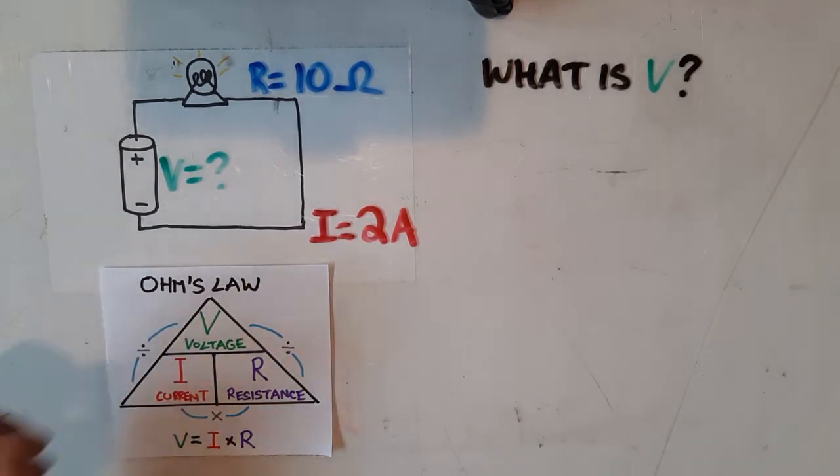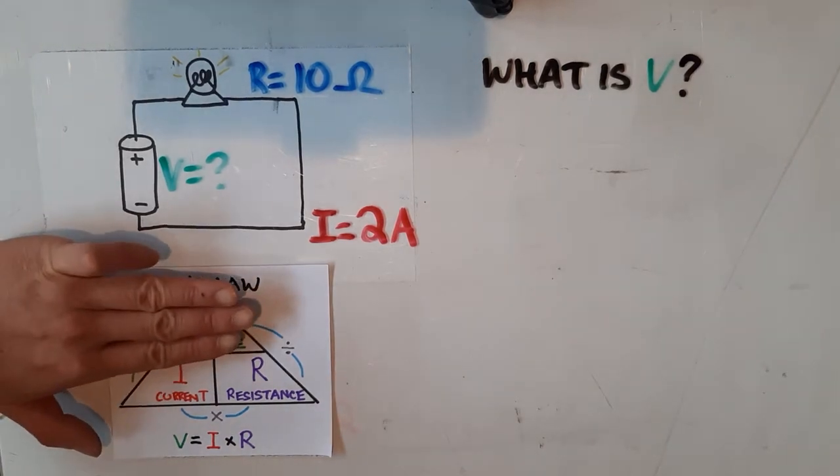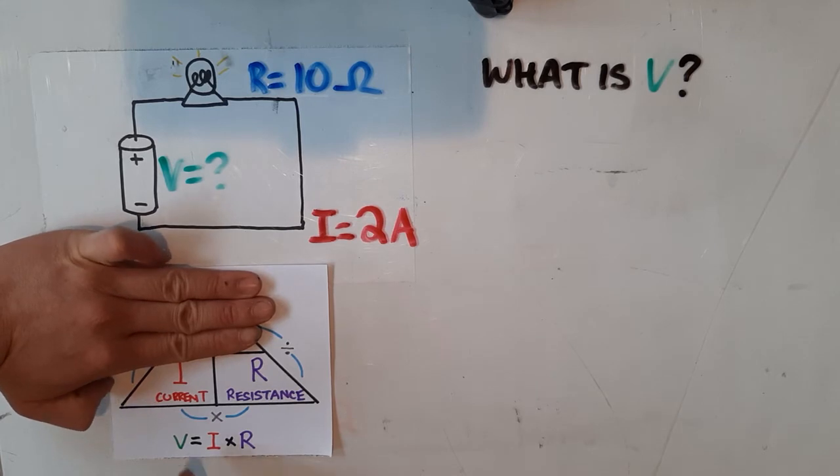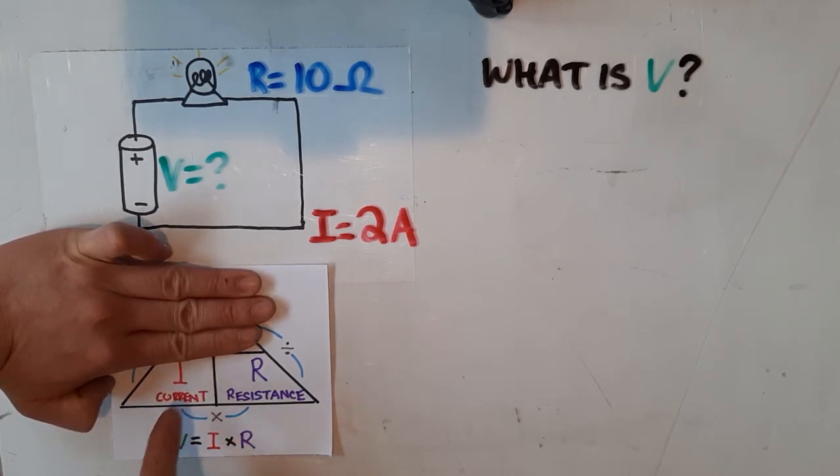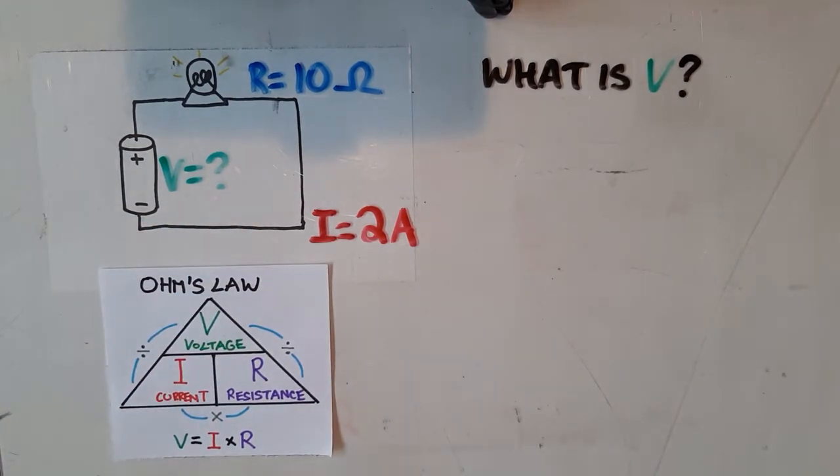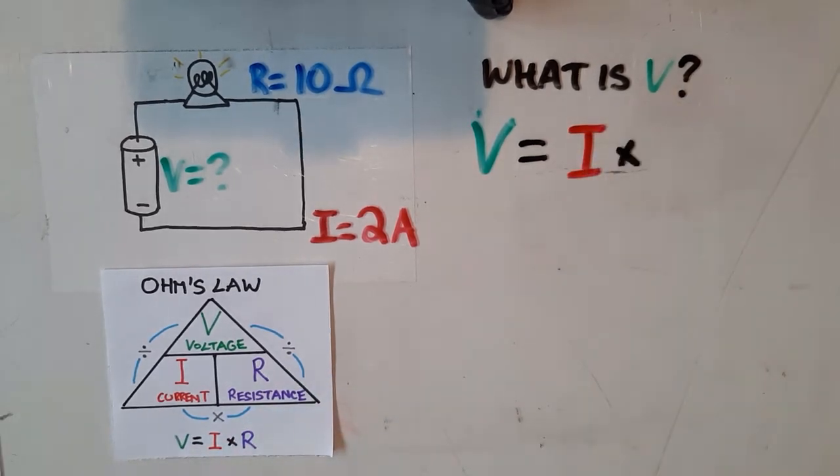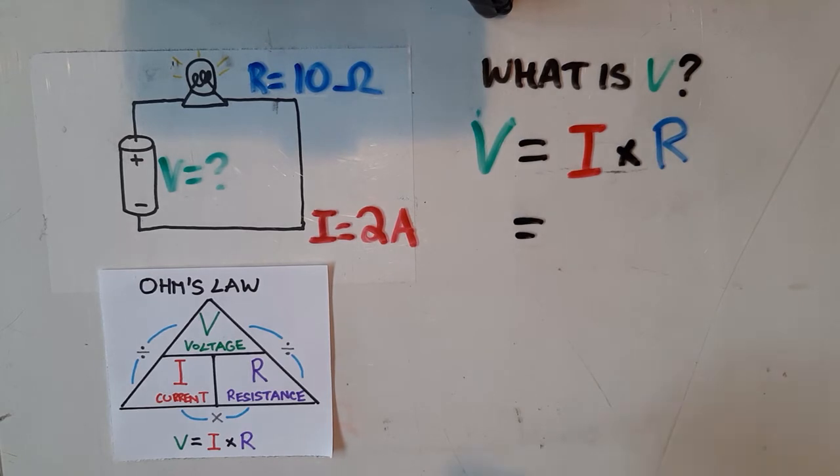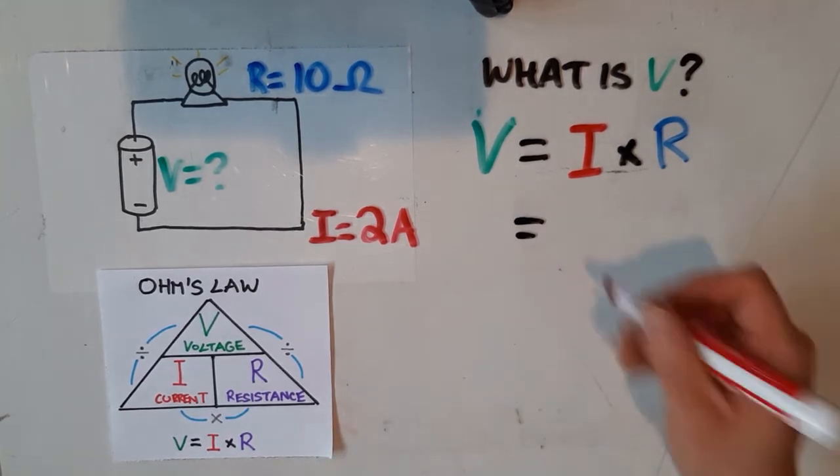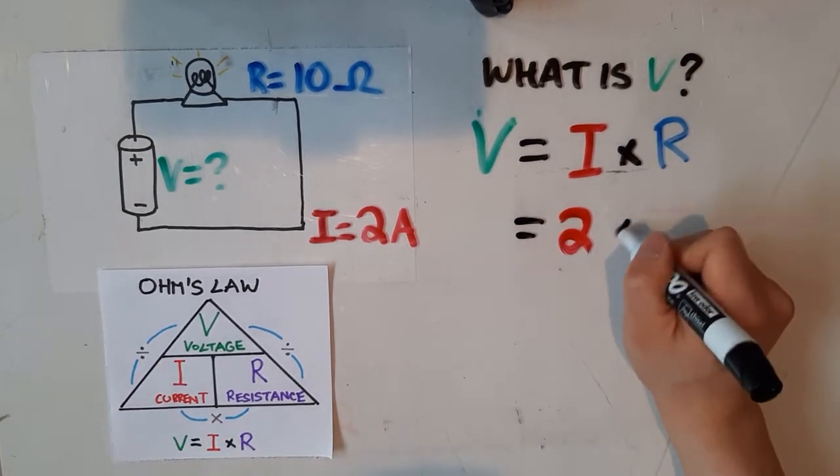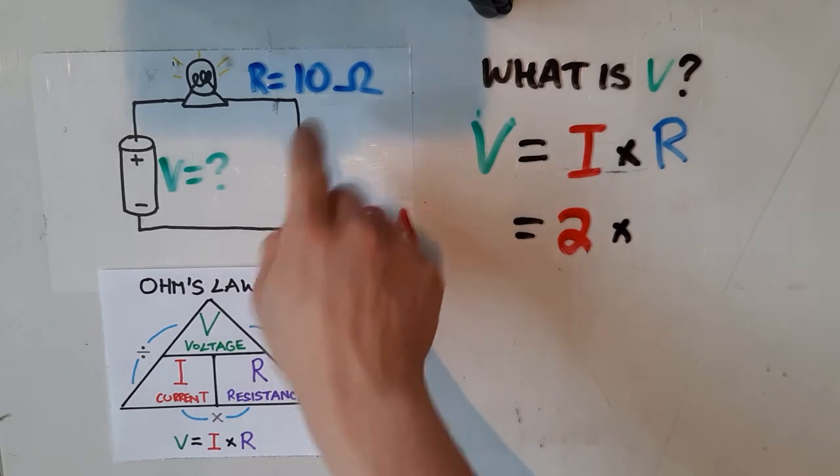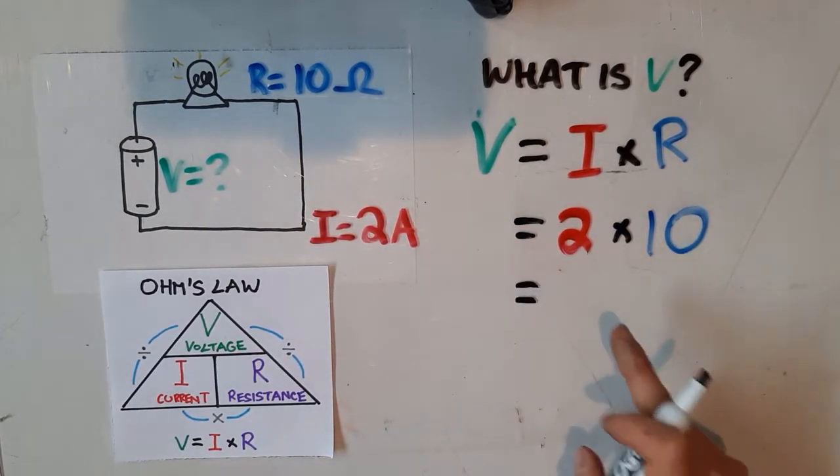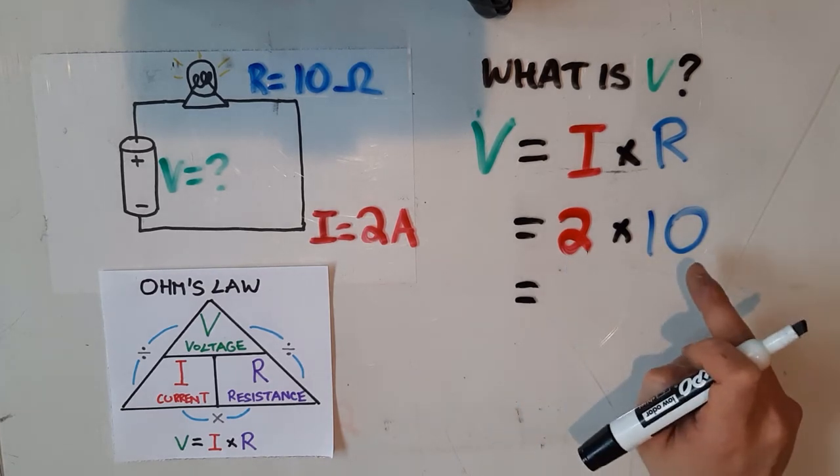So to do this, we're going to use our pyramid, and we're going to cover up voltage, because that's what we're trying to solve for, and by doing so, we can see the formula right in front of us. So I'm going to write 2 over here, we're going to multiply that by our resistance, and we know that our resistance is 10 Ohms, so I'm going to put 10 over here, and then I'm just going to multiply these numbers. So 2 times 10 is 20,